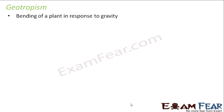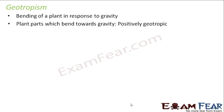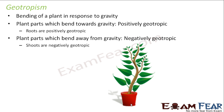The next movement is geotropism — bending of a plant in response to gravity. Plant parts which grow towards gravity are called positively geotropic. Roots grow towards the surface of the earth, so roots are positively geotropic. Whereas plant parts which bend away from gravity are said to be negatively geotropic — shoots always grow upward, so shoots are negatively geotropic. This confirms that these growth-related movements are directional.